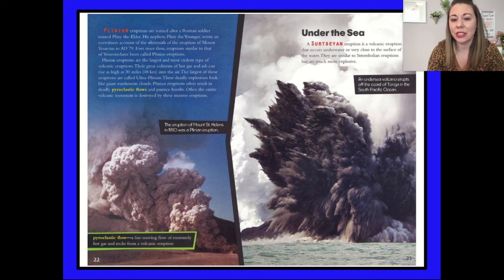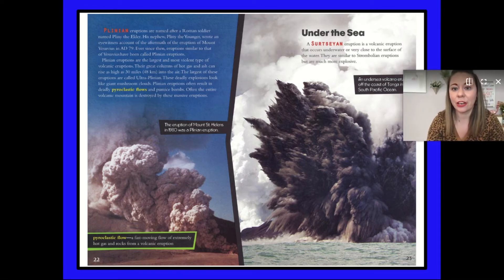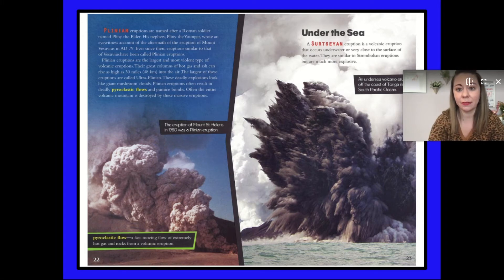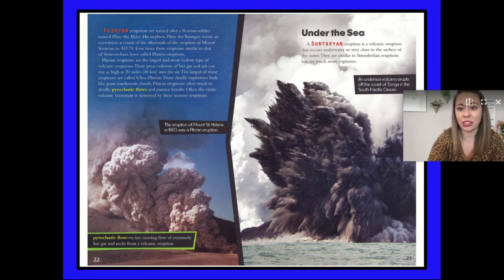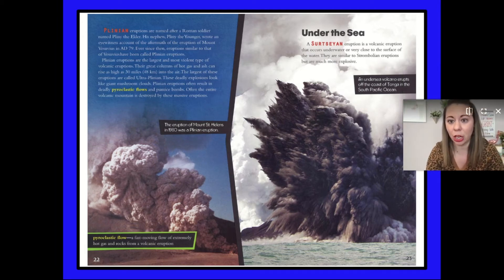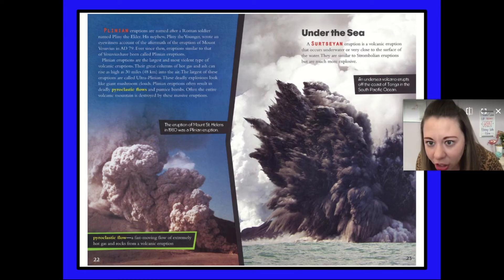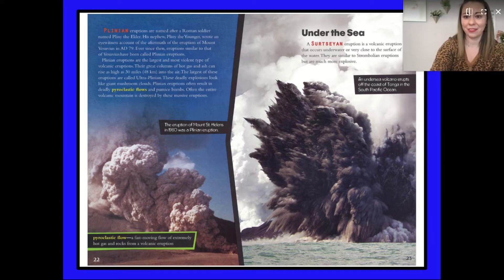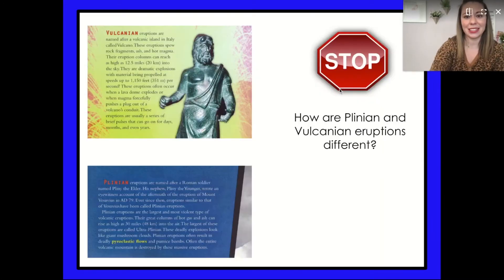The eruption of Mount St. Helens in 1980 was a Plinian eruption, and that was here in the United States. Under the sea — a Surtseyan eruption is a volcanic eruption that occurs underwater or very close to the surface of the water. They are similar to Strombolian eruptions but are much more explosive. An undersea volcano erupts off the coast of Tonga in the South Pacific Ocean.